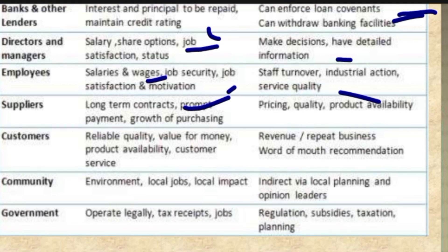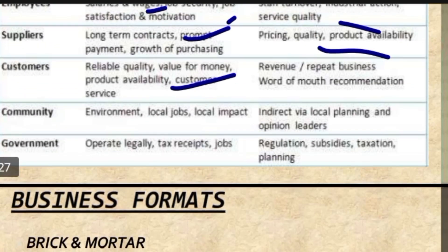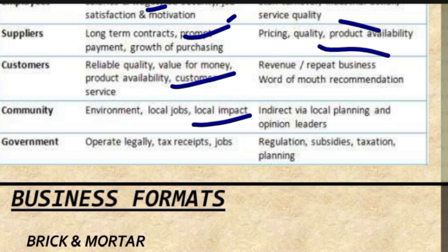Suppliers look for long-term contracts. Customers are interested in the business's commitment and how it affects revenue, repeat business, and word-of-mouth recommendations. The community is concerned about the environment, local jobs, local impact, and indirect influence via local planning. For government, it is important that the business operates legally, pays tax, and provides jobs — affecting regulation, subsidies, taxation, and planning decisions.